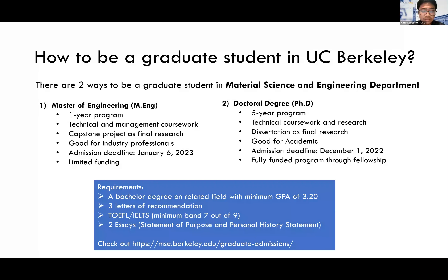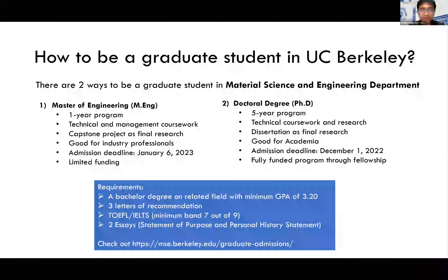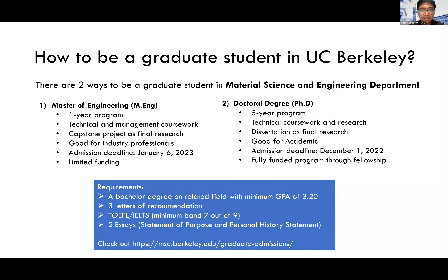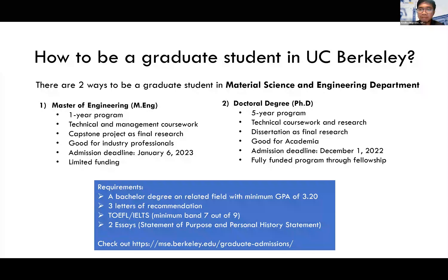The differences are: the statement of purpose focuses on why you would choose the university, why you would choose the research topic, why you would choose the department. But the personal history statement is more about your background, your family, how you value life, what success means to you, what failures are and how you overcome them. It's about your experience.